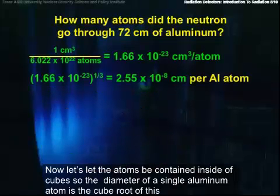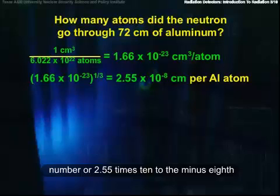Let's let the atoms be contained inside of cubes, so the diameter of a single aluminum atom is the cube root of this number, or 2.55 times 10 to the minus 8th.